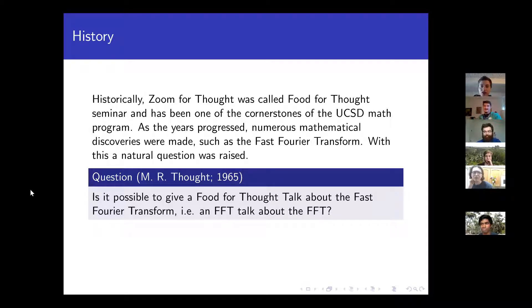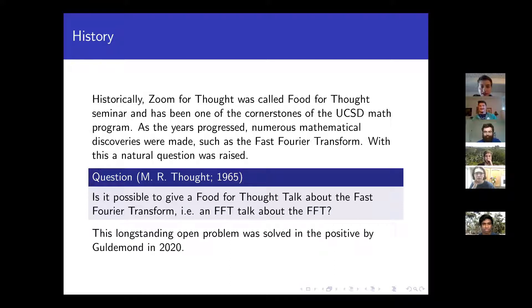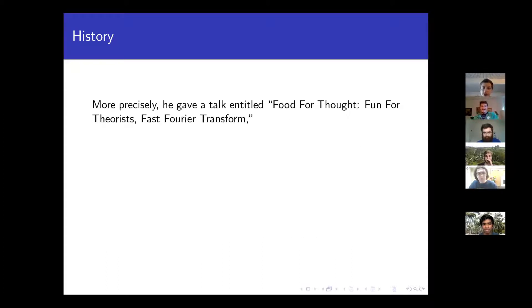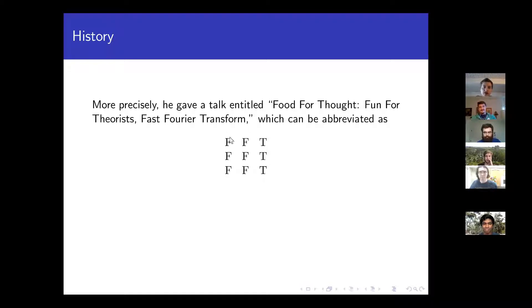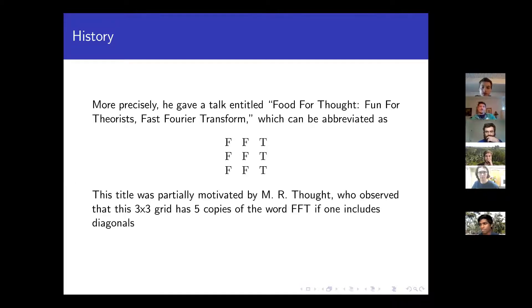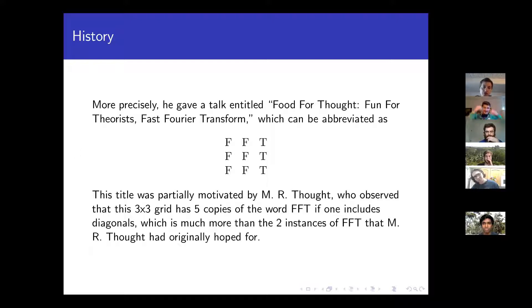This was a longstanding open problem in our seminar. And finally, it was solved in the positive by Al Gilderman, who is a PhD student here, last year. He gave a talk entitled 'Food for Thought, Fun for Theorists, Fast Fourier Transform.' The reason he chose this very particular title is because you can abbreviate it as FFT, FFT, FFT. You write it on a two-by-three grid, and the observation by Mr. Thought was that in this three-by-three grid, there are five copies of the word FFT — one in each row, and then two diagonals which contain the word FFT. This is a very strong solution: he only wanted a talk with two copies of FFT in the title, but here we actually get five.